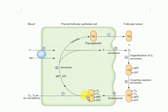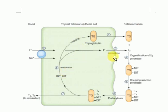The leftover MIT and DIT are deiodinated by the thyroid deiodinase enzyme. The iodine released is reutilized to synthesize more thyroid hormone. Therefore, when there is a deficiency of thyroid deiodinase, it limits iodine availability because there is no recycling or reutilization of iodine.